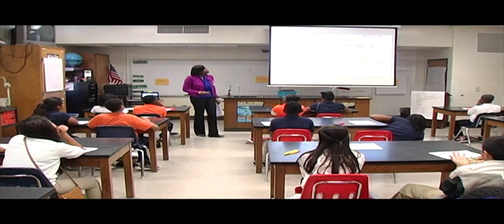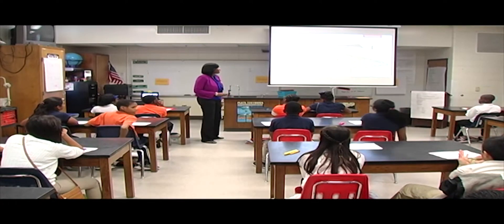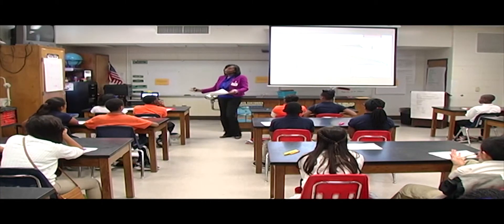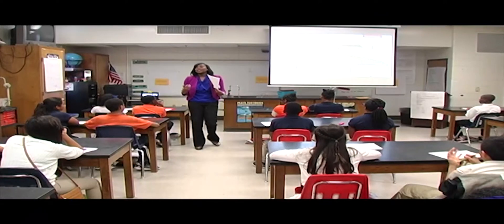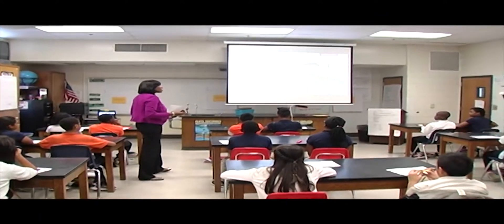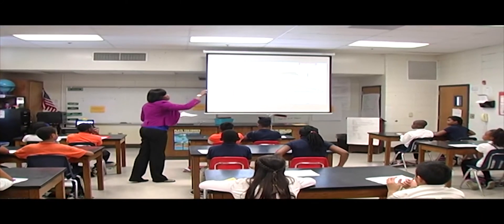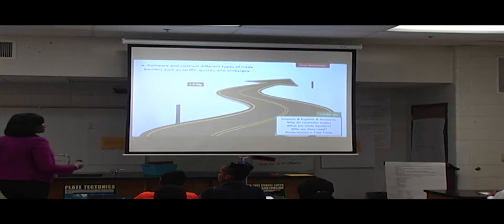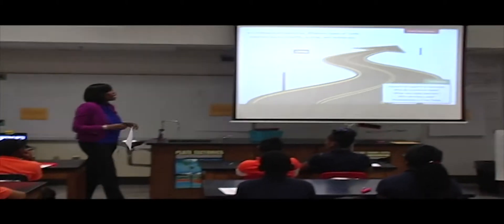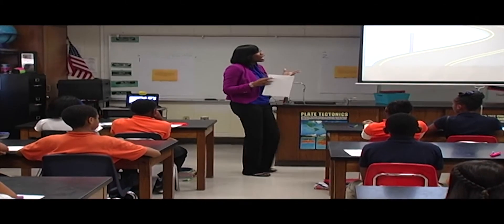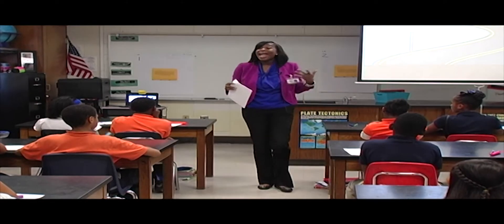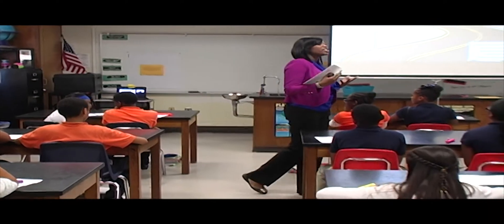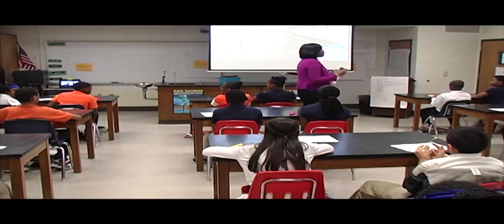Alright, so today we're going to pick up where we left off yesterday. Yesterday we talked about imports — the goods that leave one country and are imported into another. We also talked about exports, the goods that leave a country, and domestic goods, which are goods made at home. Then we talked about why countries trade and the fact that they don't have the resources to make everything they need, so they have to trade to get what they need from other countries.